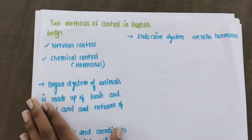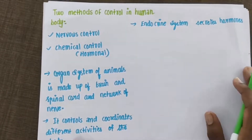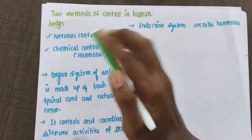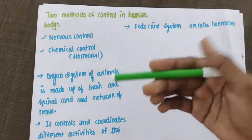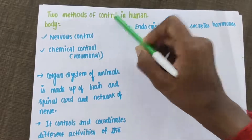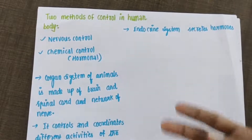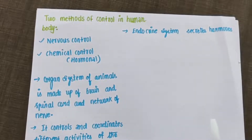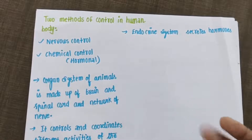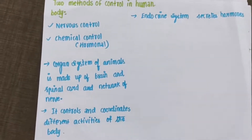Control and coordination happens mainly because of the nervous system and also due to chemical control, which is the hormonal system. The nervous system works via nerves and gives a very fast response. Chemical control — that is, hormones — gives a very slow response. For example, growth takes around 17–18 years; that is called the chemical control system.